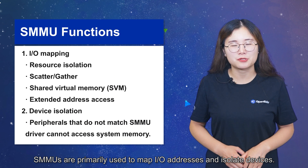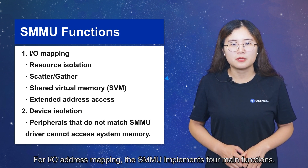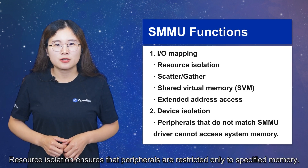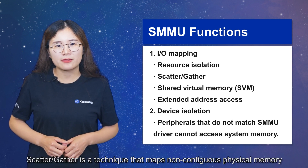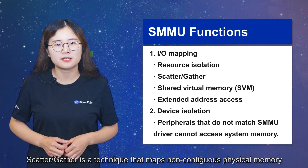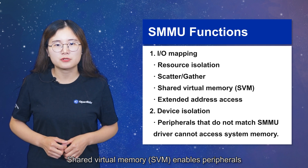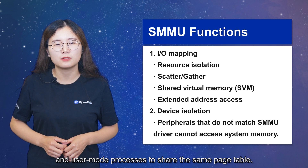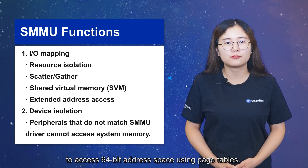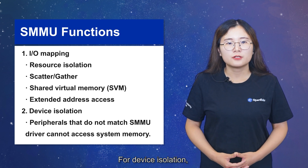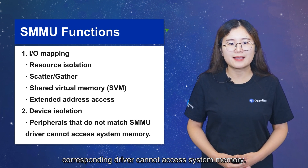SMMUs are primarily used to map IO addresses and isolate devices. For IO address mapping, the SMMU implements four main functions. Resource isolation ensures that peripherals are restricted only to specified memory. Scatter-gather is a technique that maps non-contiguous physical memory into continuous IOVA ranges. Shared virtual memory enables peripherals and user mode processes to share the same page table. Extended address access allows 32-bit peripherals to access 64-bit address space using page tables. For device isolation, the SMMU ensures that peripherals that do not match the corresponding driver cannot access system memory.